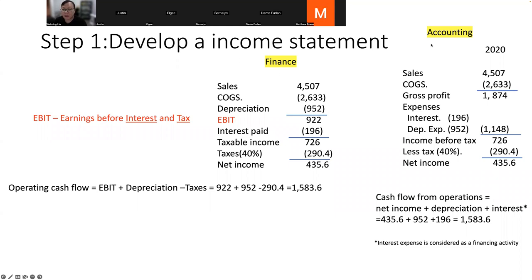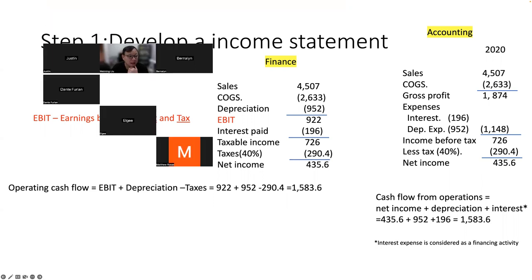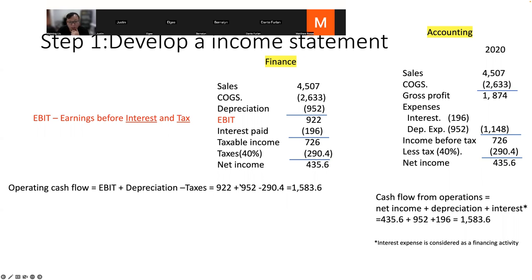To summarize, the formula for operating cash flow is: EBIT plus depreciation minus taxes. That's step one — the operating cash flow calculation.